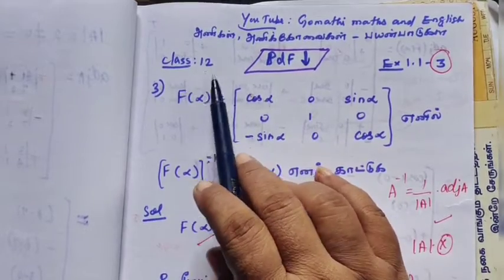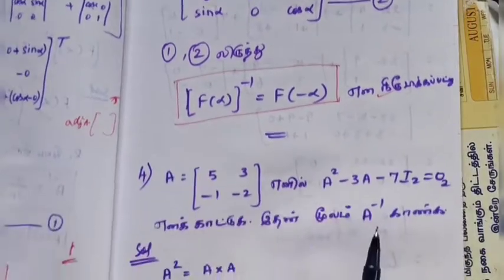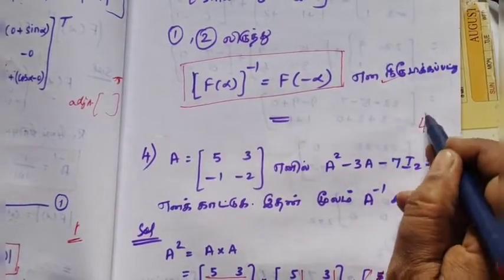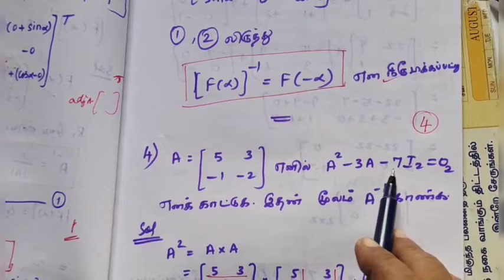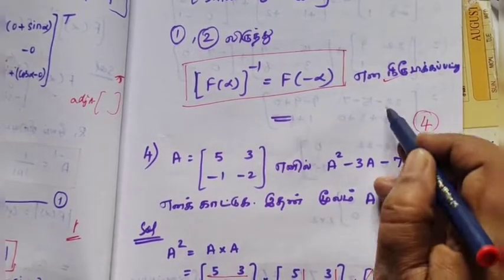It is a PDF link to get. Class 12, exercise 1.1. Question number 3 was in the last class. Question number 4: you are given A² minus 3A minus 7I₂ equal to 0, where A is a 2 by 2 matrix.